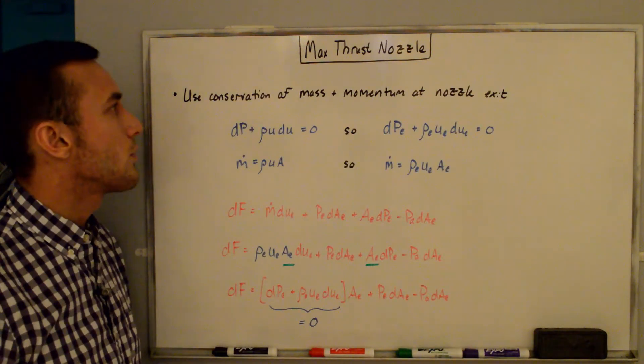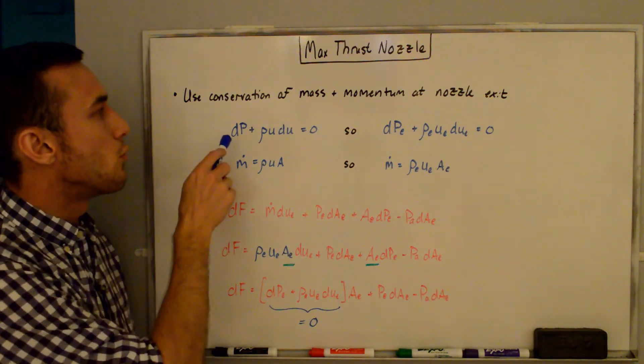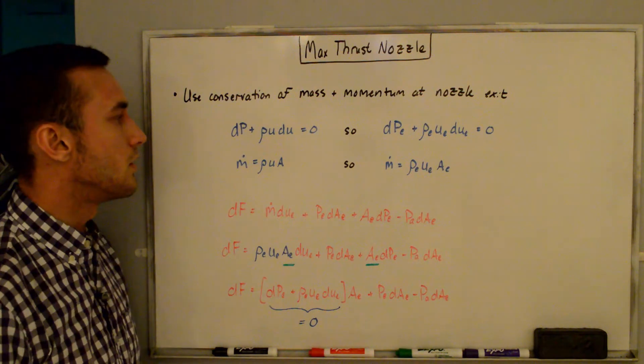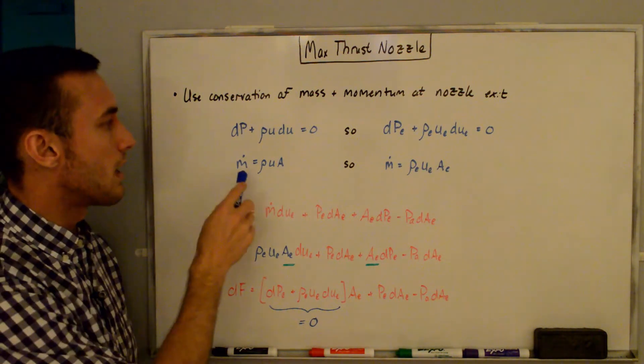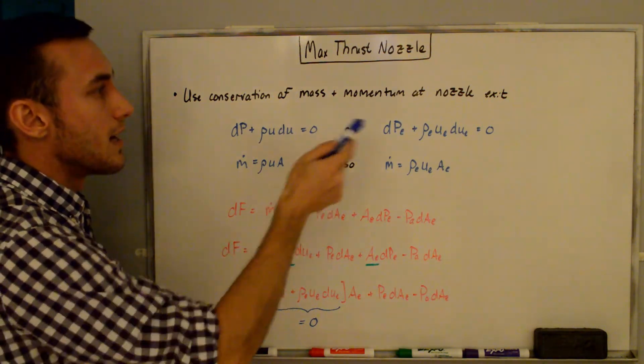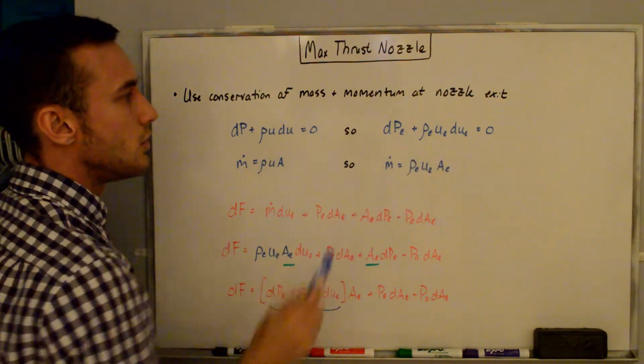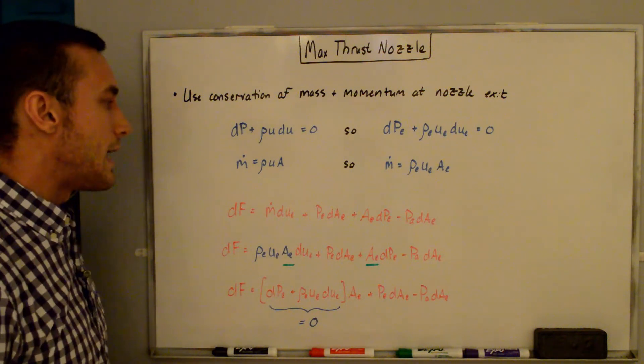So now to simplify this equation down even further, we want to use the conservation of mass and momentum at the nozzle exit. This is the momentum equation in differential form, so dp + ρudu = 0. And this is the conservation of mass expressed as a mass flow rate. So ṁ = ρuA, and so if we plug in the variables at the nozzle exit, so subscript E, we get dpE + ρEuEduE = 0, and ṁ = ρEuEAE.